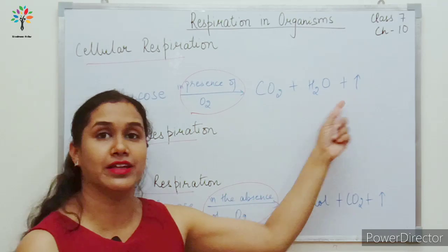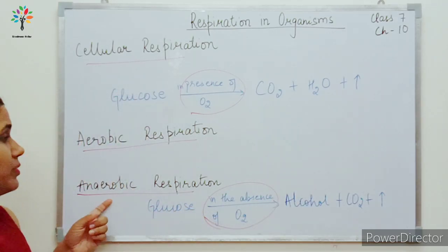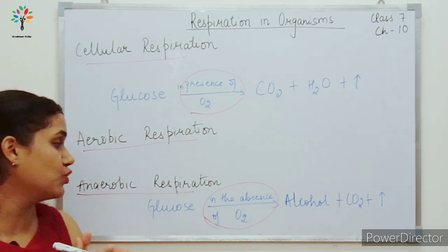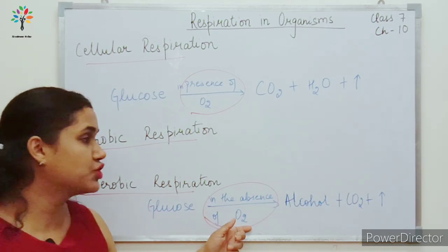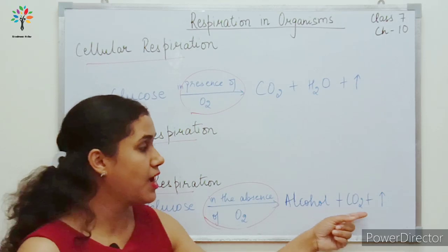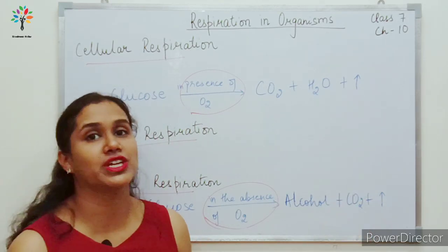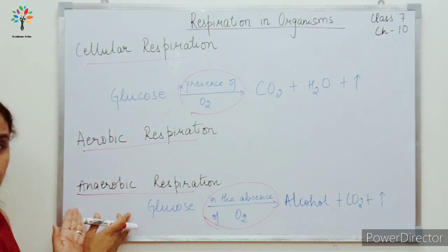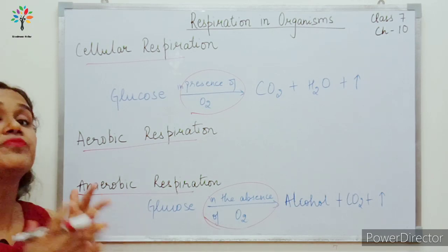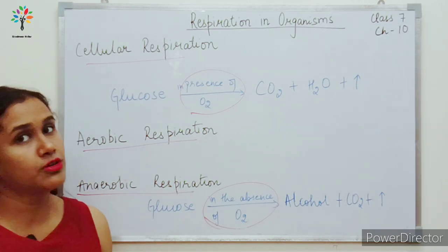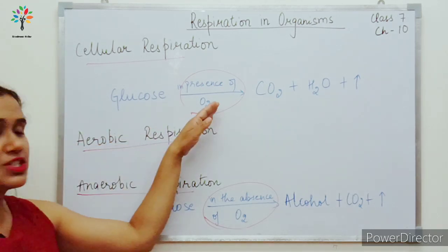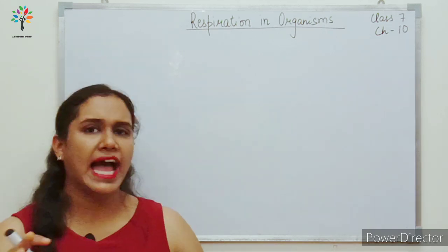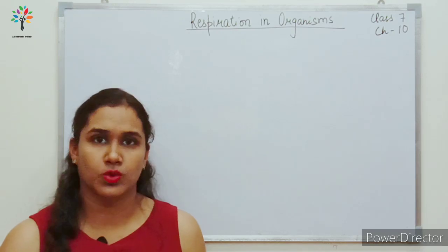When the breakdown of food takes place in the absence of oxygen, it is termed anaerobic respiration. For anaerobic respiration, the products change: glucose in the absence of oxygen produces alcohol, carbon dioxide, and energy is released. In both aerobic and anaerobic respiration, we get energy by breaking down food. Aerobic means oxygen is present; anaerobic means oxygen is absent.